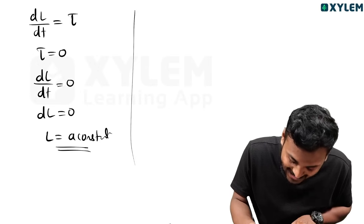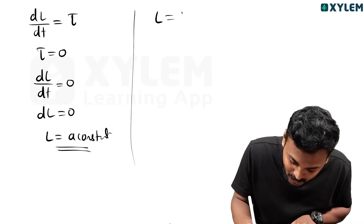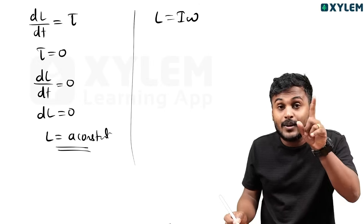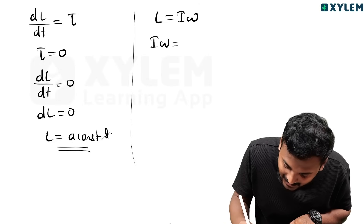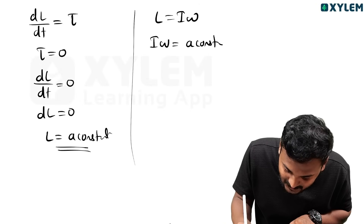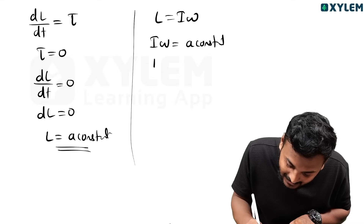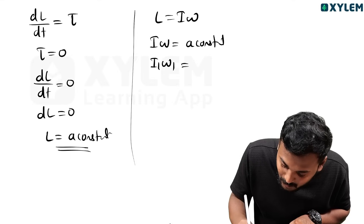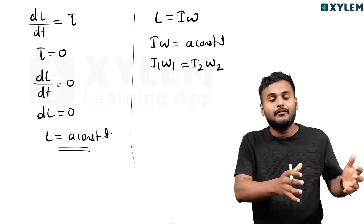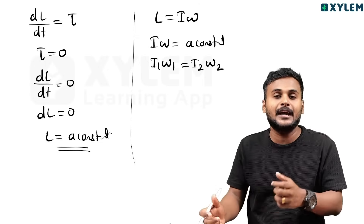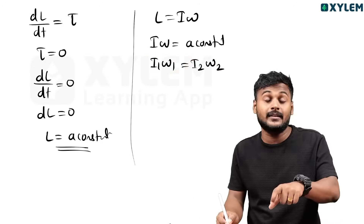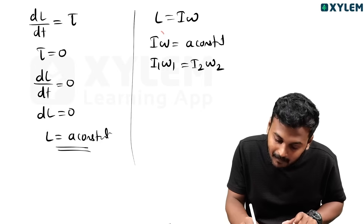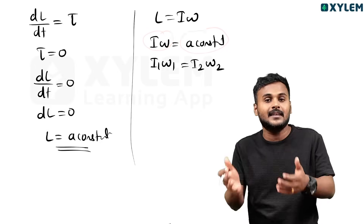Angular momentum L equals I omega. So that constant means I omega equals a constant. Therefore i1 omega1 equals i2 omega2 — angular momentum before and after is conserved. So i1 omega1 = i2 omega2, and I omega equals a constant.